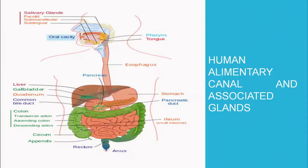Let us move on to extracellular digestion using the human alimentary canal. The structures required for digestion are the alimentary canal organs and associated glands. The first part is the oral cavity, which contains the tongue and salivary glands — parotid, sub-maxillary and sublingual — present around the oral cavity. Then there is a tube-like esophagus extending from the mouth.